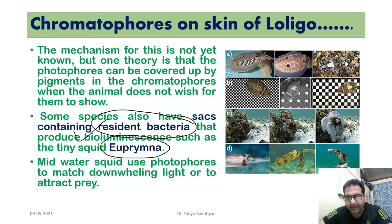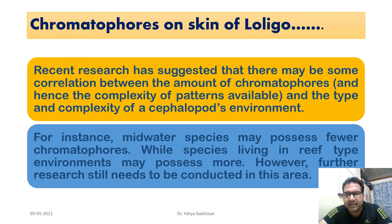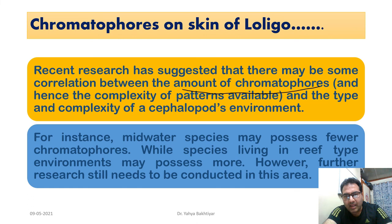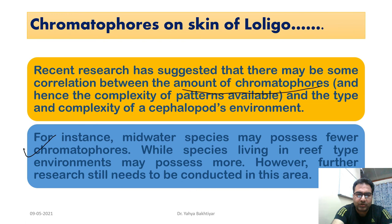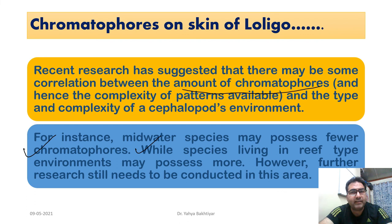Deep-sea species may possess fewer or even no chromatophores as their color changes would not be visible in environments with no light. Recent research suggests there may be a correlation between the amount of chromatophores and the complexity of patterns available, and the type and complexity of the cephalopod's environment. For instance, mid-water species may possess fewer chromatophores, while species living in reef environments may possess more, since reefs are colorful and well-lit.